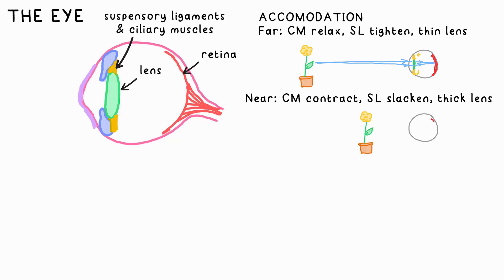To focus on near objects, the opposite is true. The ciliary muscles contract, the suspensory ligaments slacken, and the lens becomes fatter or thicker. That means it becomes more powerful, so light is refracted more, which means that the light coming from the object still converges.